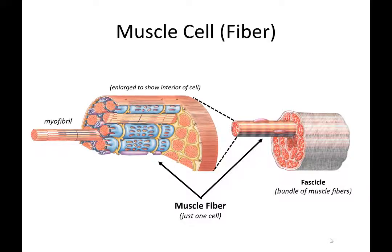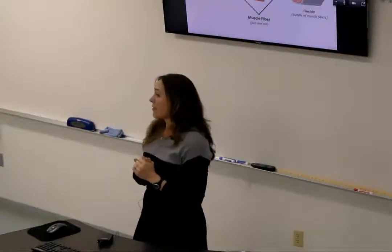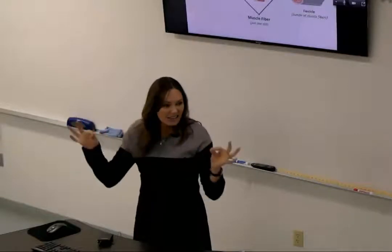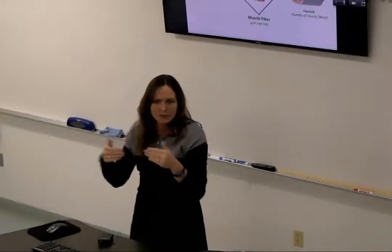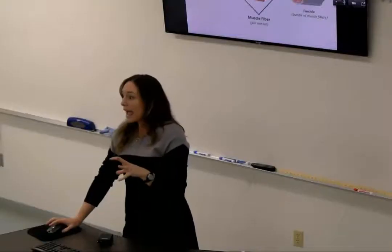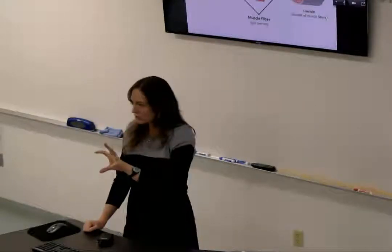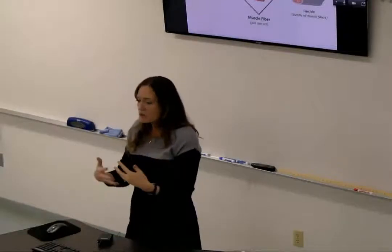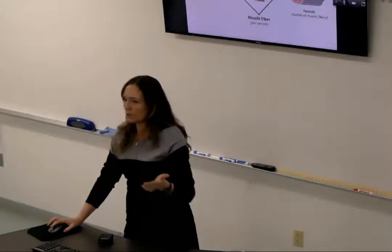Inside a single muscle fiber are little things called myofibrils. If you think of a muscle cell or muscle fiber like a mechanical pencil — the lead is long and cylindrical like the pencil itself, but it's the inner workings, also cylindrical. That's the myofibrils. They're actually going to be the part doing the contracting. The yellow part will conduct electricity down in the cell, the blue part will release calcium as the inside trigger, and the myofibrils are going to be doing the contracting.